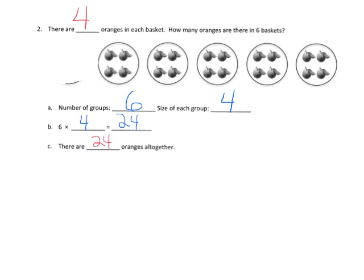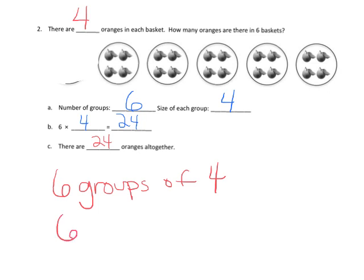This is an example where we're talking about groups of equal sizes. There are six groups of four — in other words, six times four equals 24 oranges altogether.